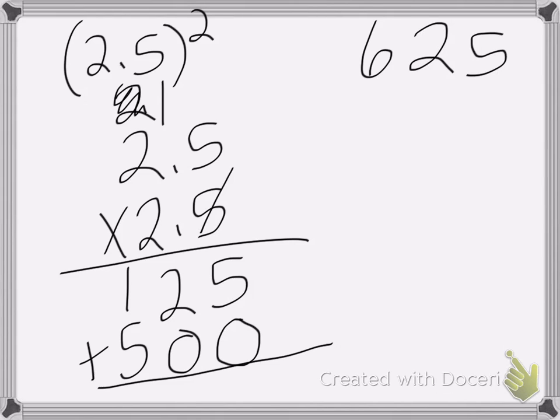Now I need to figure out where the decimal goes. So again, count all the decimal places: 1, 2. Okay, so when I count over here, I'm going to go 1, 2. This is where my decimal goes.